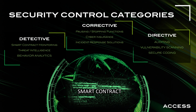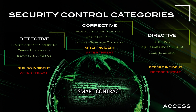There are also corrective-type controls. In the smart contract world, corrective can mean pausing or stopping functions completely — but that's very disruptive. There are cyber insurance protocols, so if something happened and assets are lost, insurance can back it. There are also incident response solutions — funds may be gone, but you can talk to the KYC custodian and see how to correct and respond. These three control types map to different phases: directive is before an incident, detective is during and after a threat, and corrective is after the incident.